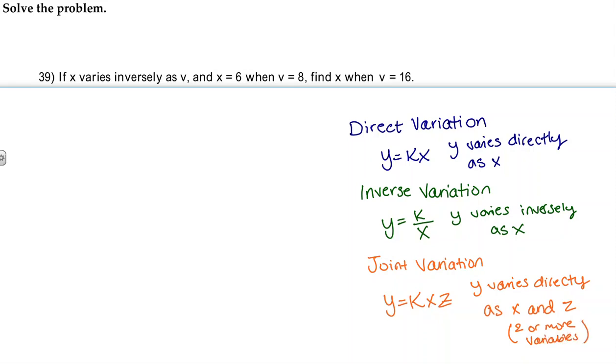So since the question says if x varies inversely as v and just v, one variable, we're going to be looking at inverse variation. So let's pull out our formula, y equals k over x, and now let's pay attention to which variables are being placed in the formula.